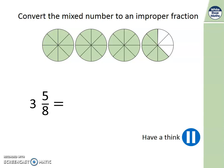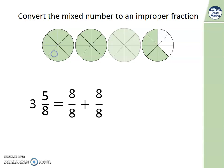Let's have a look at the answer. So here I've got 8 eighths. And here I've got another 8 eighths. And here I've got another 8 eighths. And here I've got another 5 eighths. So if we look at the numerators, 8, add 8, add 8.